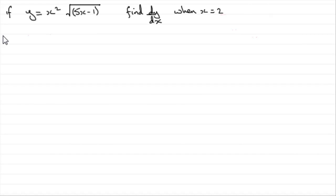Hi, now in the first part of this question, we're given that if y equals x squared times the square root of 5x minus 1, we've got to find the value of dy by dx when x is 2.